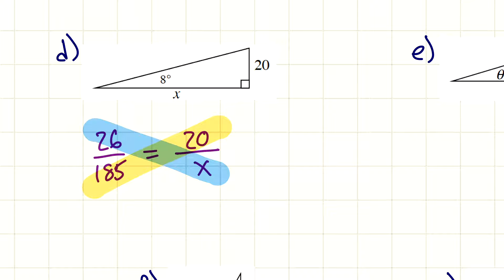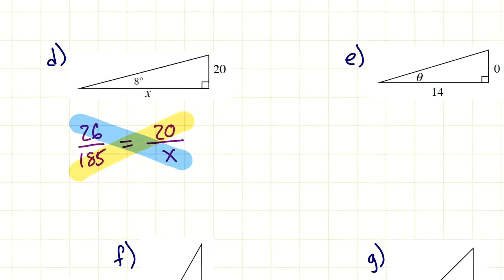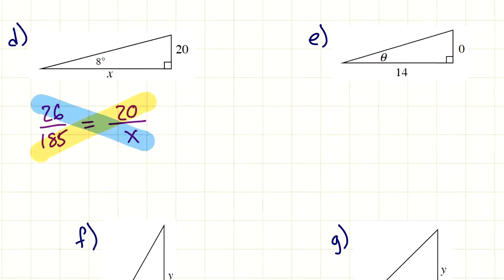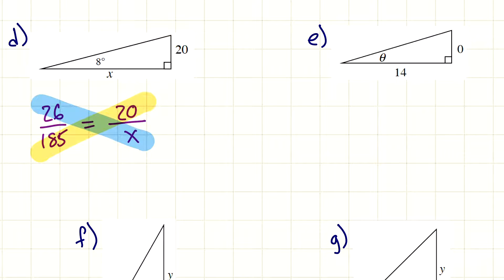And then again, we would cross multiply on these to solve this. So you should end up with an answer for X on that one. And that's it. On those, I'm not going to multiply those out for you. I'll let you do those on your own. That's something I'll check when I look at your work to see if you finish those problems.